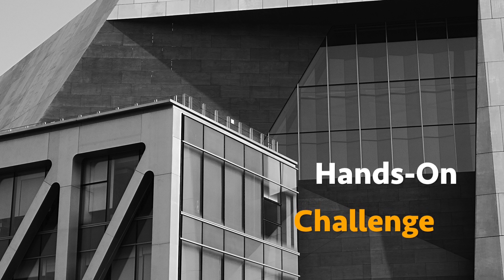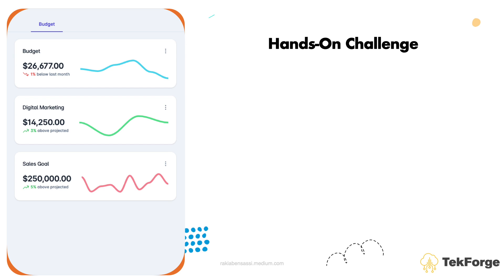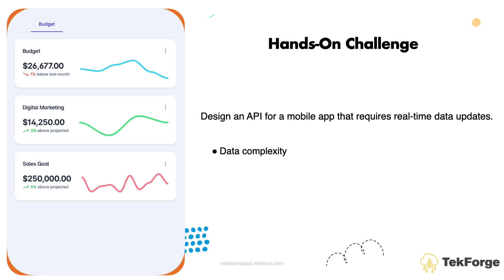Hands-on challenge: let's put theory into practice. Imagine you are designing an API for a mobile app that requires real-time data updates and efficient communication. Which architectural style would you choose and why? Consider the app's needs, data complexity, and the user experience you aim to provide. Remember that the art of API design lies not just in understanding these styles but in knowing when and how to apply them effectively. Embrace these architectural philosophies and you will find yourself not just building APIs but crafting experiences that enrich the digital world.